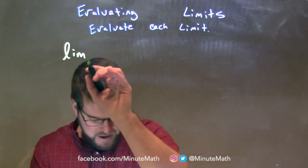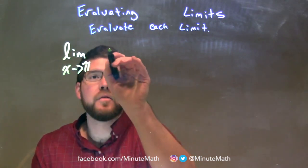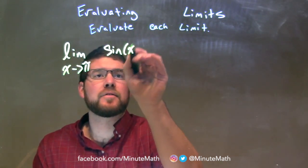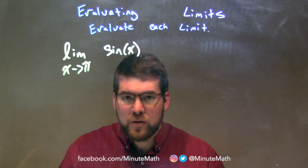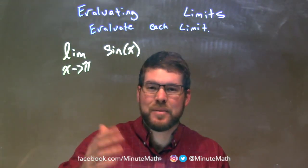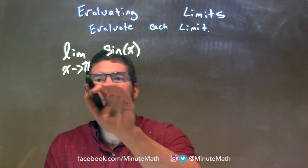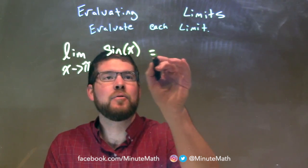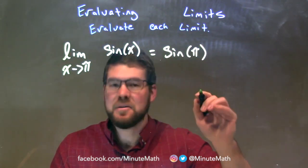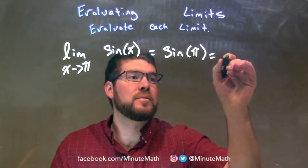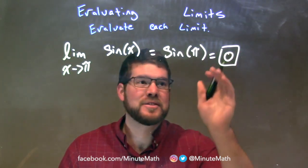The limit as x approaches pi of sine of x. Sine is a trig function, and we can take the limit wherever it exists by plugging pi directly in for x. We have sine of pi, which is just 0. So our limit equals 0.